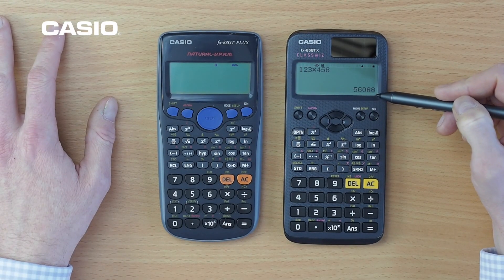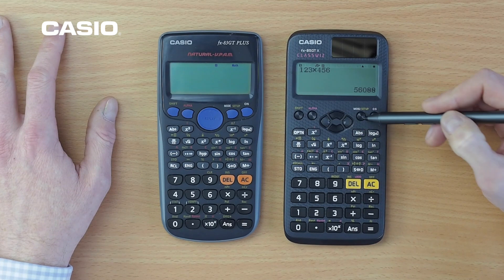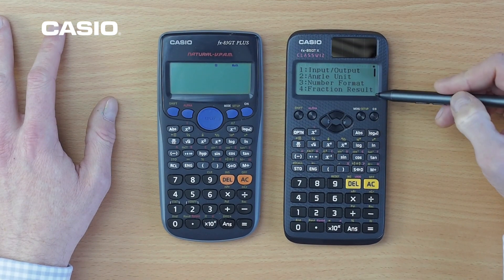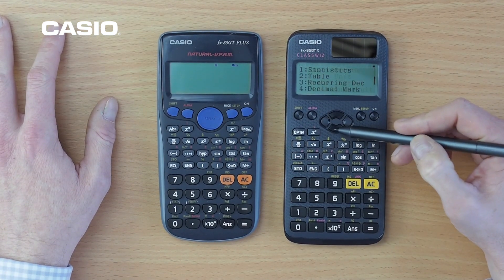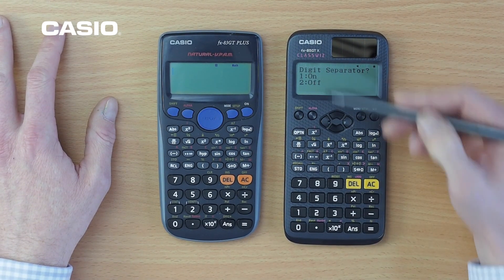Now one of the features that I really quite like is a new digit separator. So let's go into the setup. Scroll bar down the side, we're going to scroll down twice. And here we go, here's the digit separator. So let's press one and we'll switch that on by pressing one again.